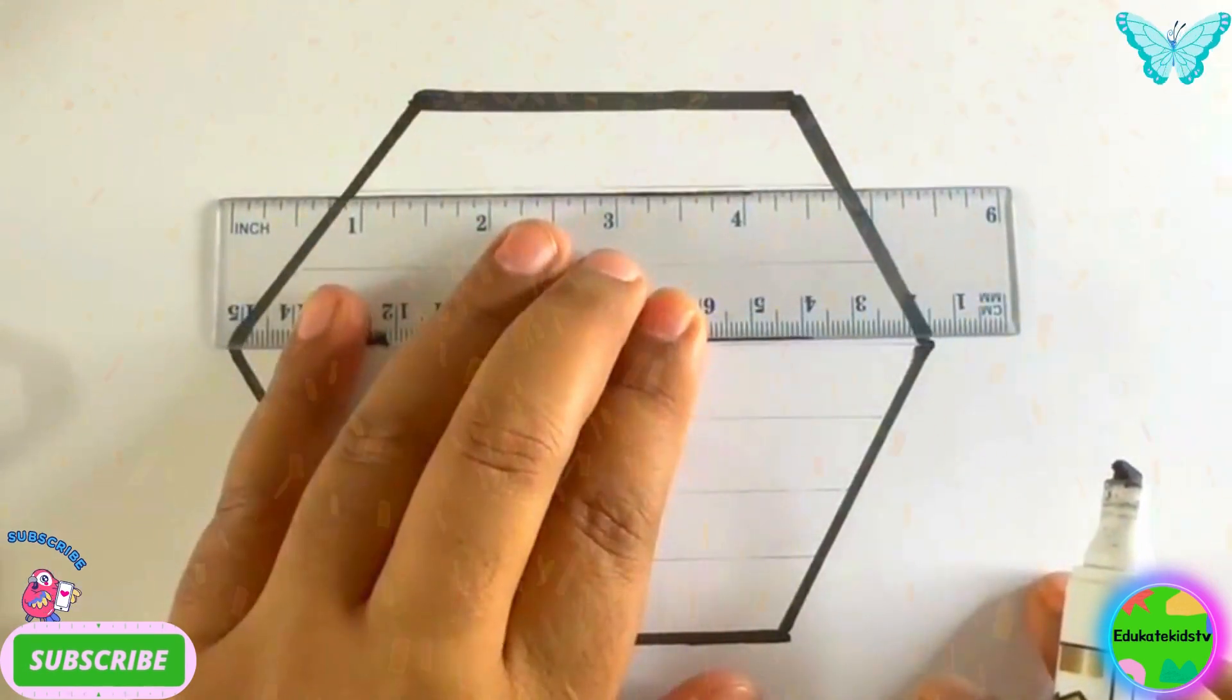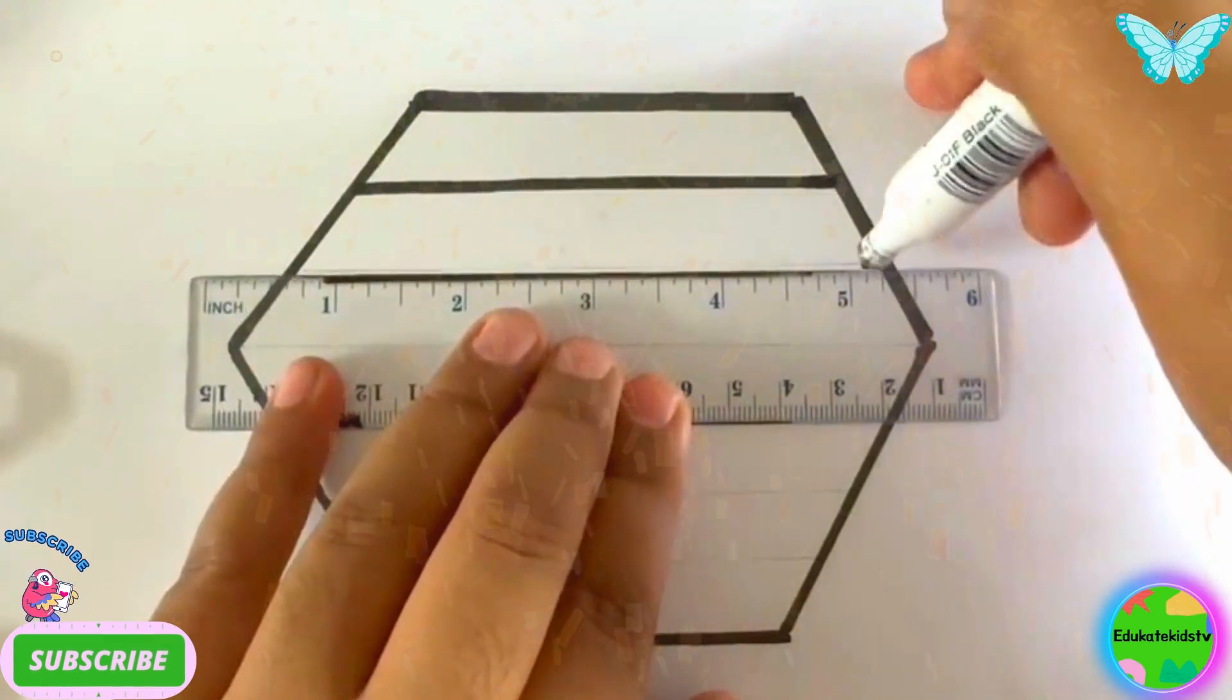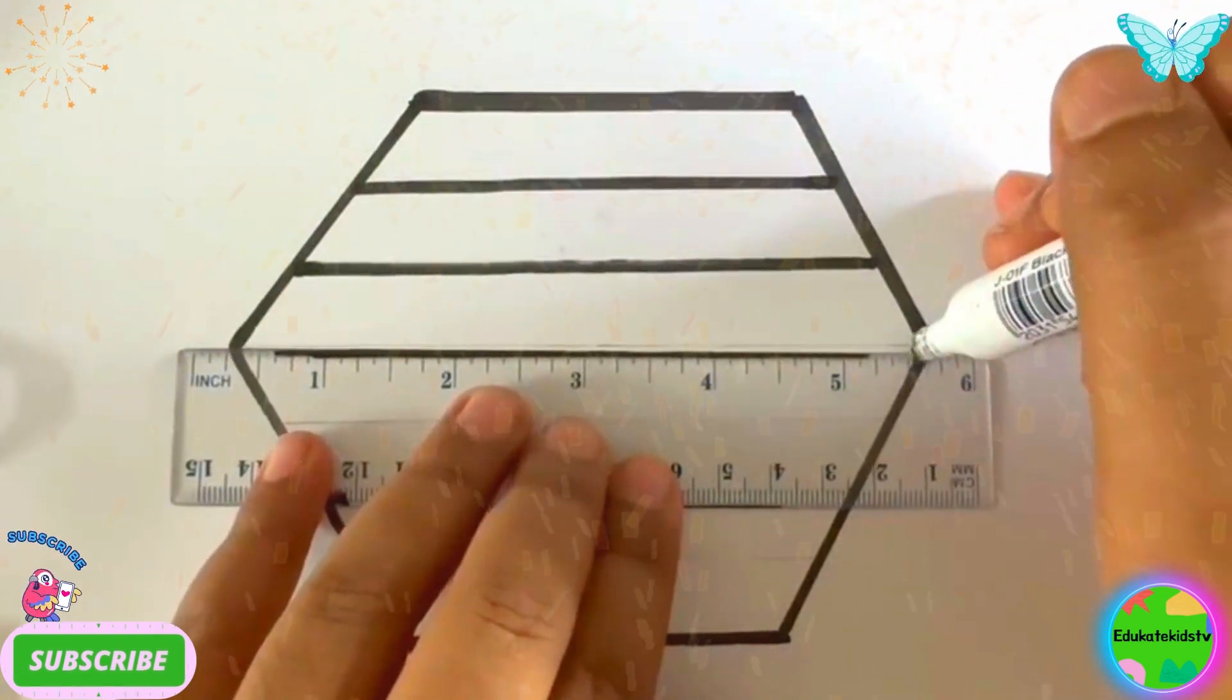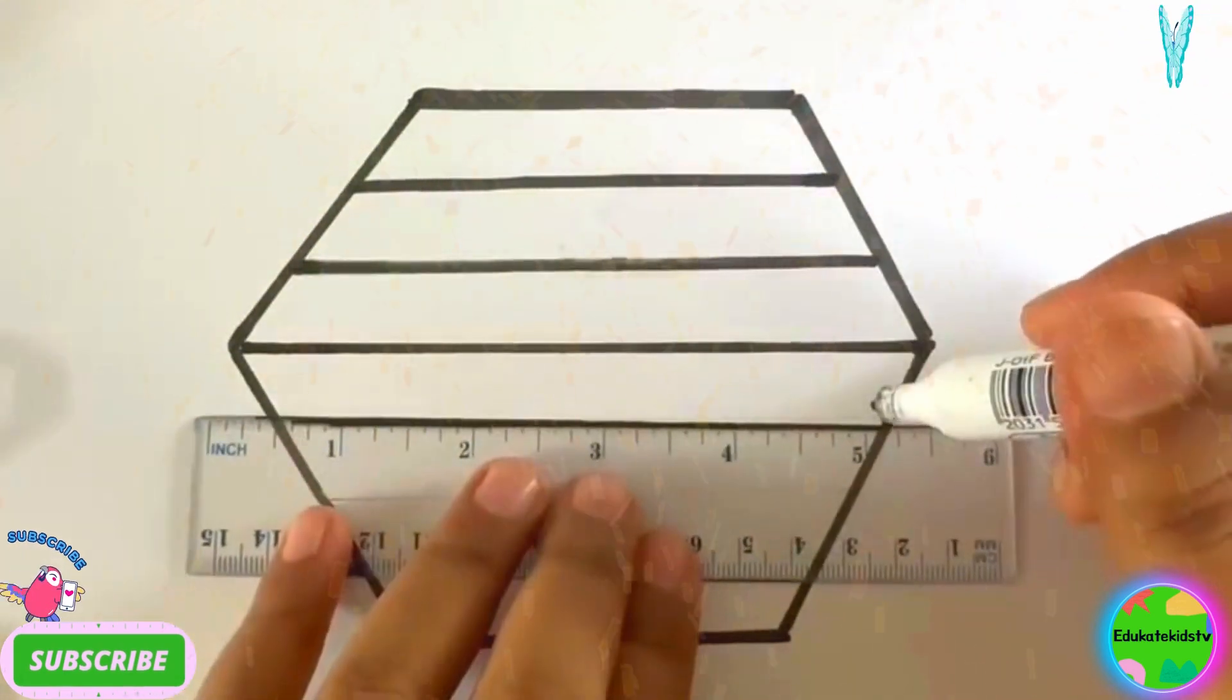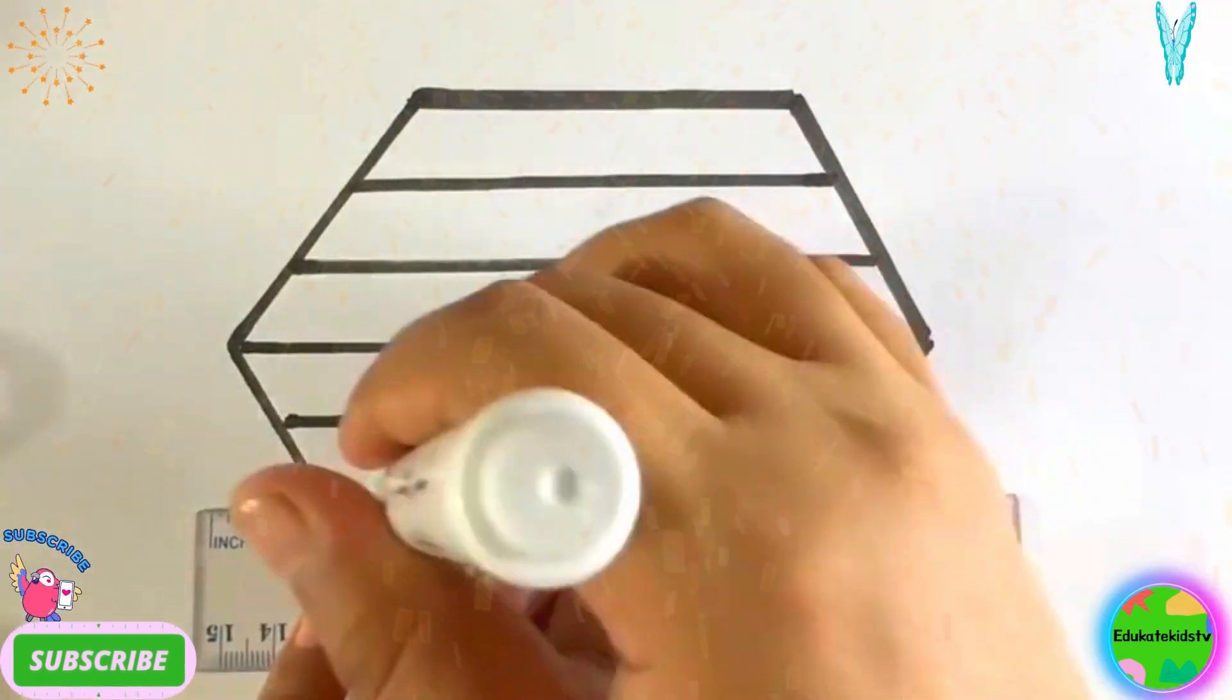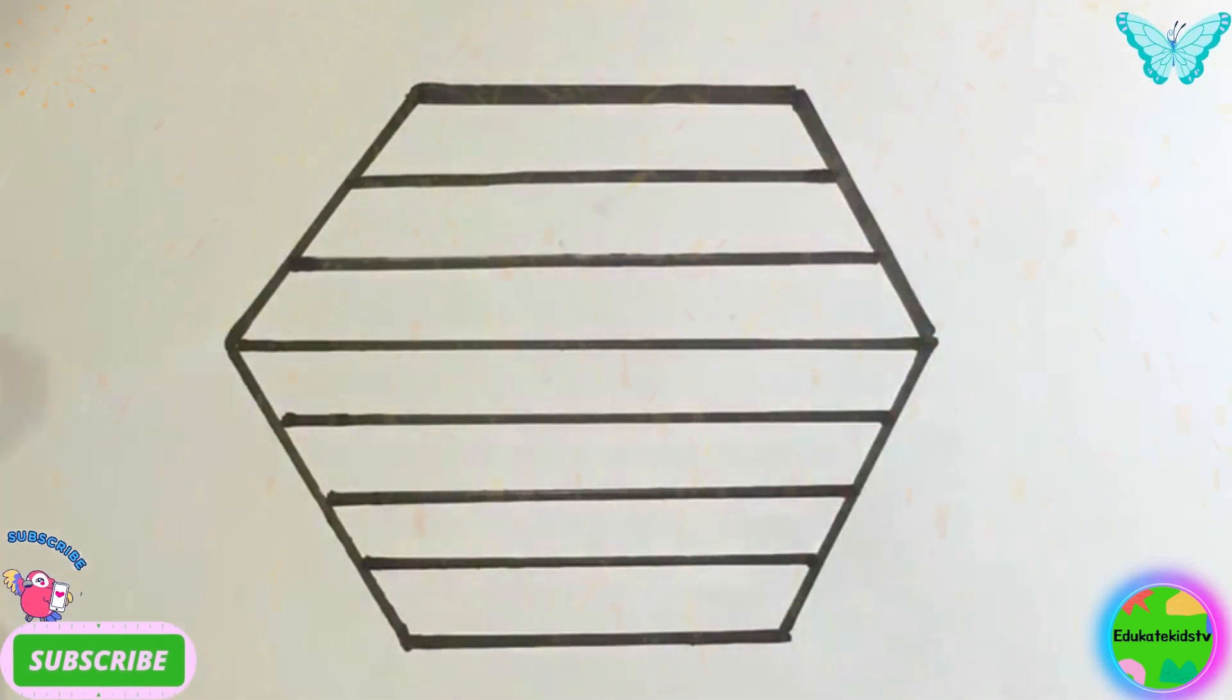Now I'll draw some lines inside it. Wow! Hooray! Yippee! Nice! I like it. Do you like it? Wow! Now I'll draw small circles within it.